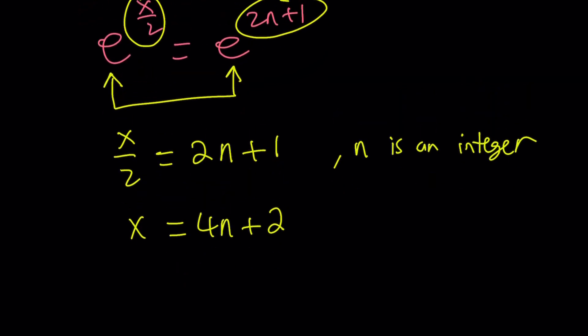Well, if n is 0, x is 2. If n is 1, x is 6, so on and so forth. So we're basically talking about numbers that are 2 mod 4. In other words, if you divide that integer by 4, the remainder will always be 2. So even numbers that are not multiples of 4.